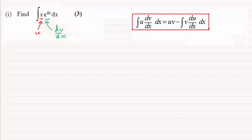Therefore, the integral of x e to the power 4x with respect to x equals—I always say it's one part times the integral of the other part, minus the integral of the part you just integrated times the differential of the other part.